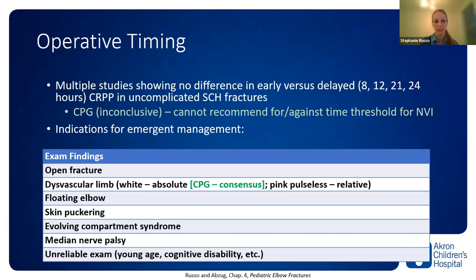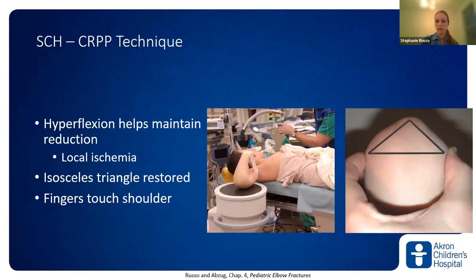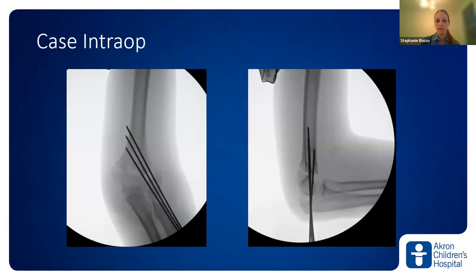Timing for treatment of supracondylar humerus fractures remains controversial. Most can probably wait until the next morning, but factors pushing you to the OR sooner include open fracture, fully dysvascular limb, pink pulseless hand as a relative indication, evolving compartment syndrome, and median nerve palsy — which can mask a compartment syndrome in patients with unreliable exam. When reducing, look for restoration of the isosceles triangle between the epicondyles and olecranon, and the patient's fingers should be able to touch their shoulder. Two pins for type 2s, three pins for type 3s.